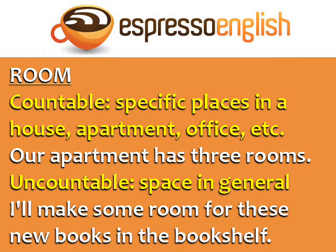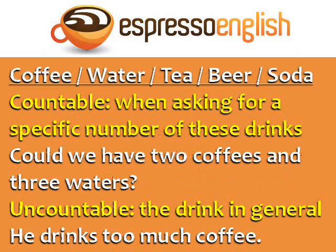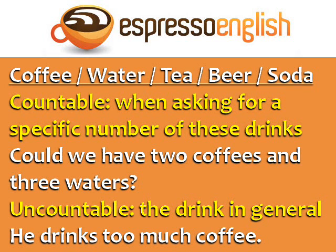'Room' is uncountable when talking about space in general: 'I'll make some room for these new books in the bookshelf.' Coffee, water, tea, beer, and soda are countable when asking for a specific number of these drinks: 'Could we have two coffees and three waters?' They're uncountable when talking about the drink in general: 'He drinks too much coffee.'